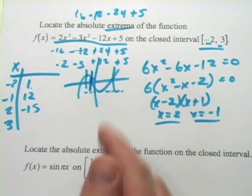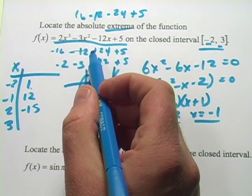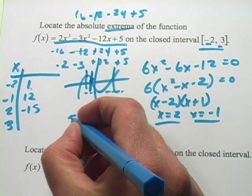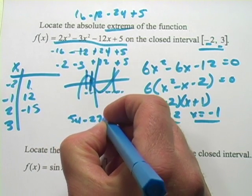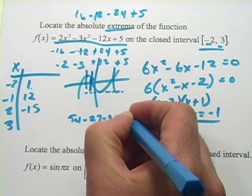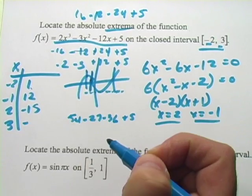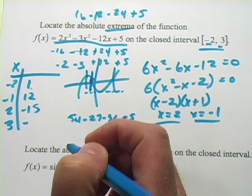Might want to double check my math on this one. And let's see, putting a three in there, we've got 54 - 27 - 36 + 5, I think. So that's going to be negative 4.